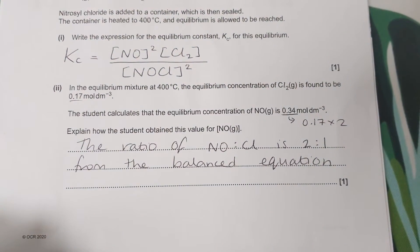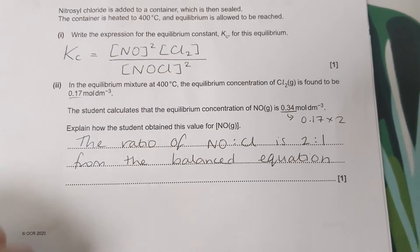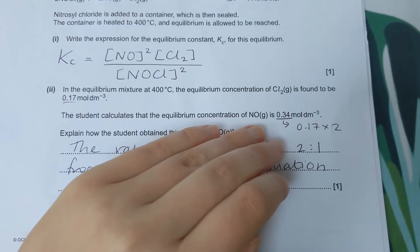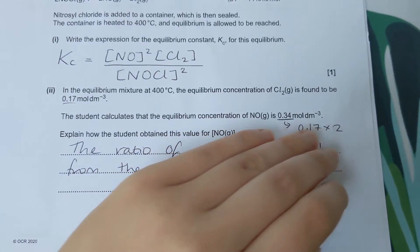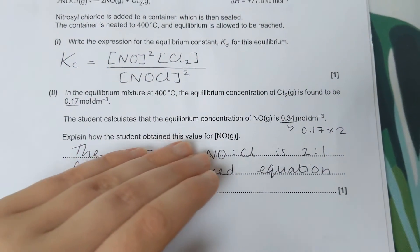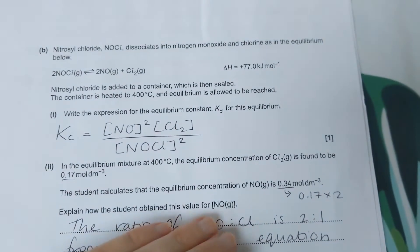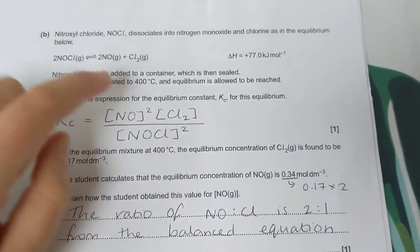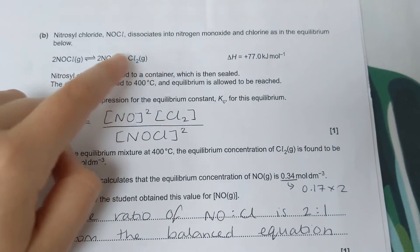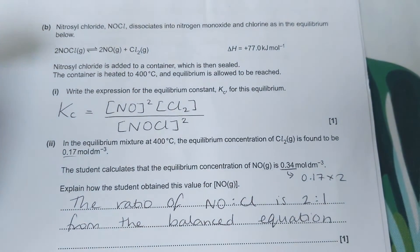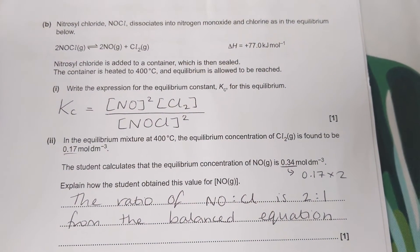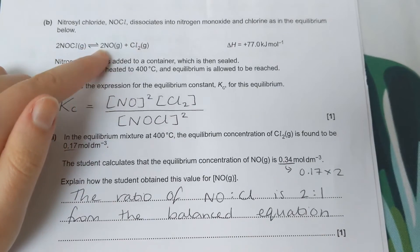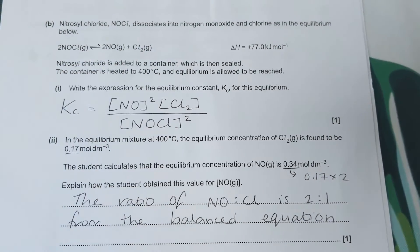Then we have a strange question. It says the equilibrium concentration of chlorine is found to be 0.17. The student calculates the equilibrium concentration of NO to be 0.34. Explain how the student obtained this value for NO. If we look back at this balanced equation, we have twice as much of the NO compared to the chlorine. Therefore, it makes sense that the equilibrium concentration of the NO will be twice as much compared to the chlorine.